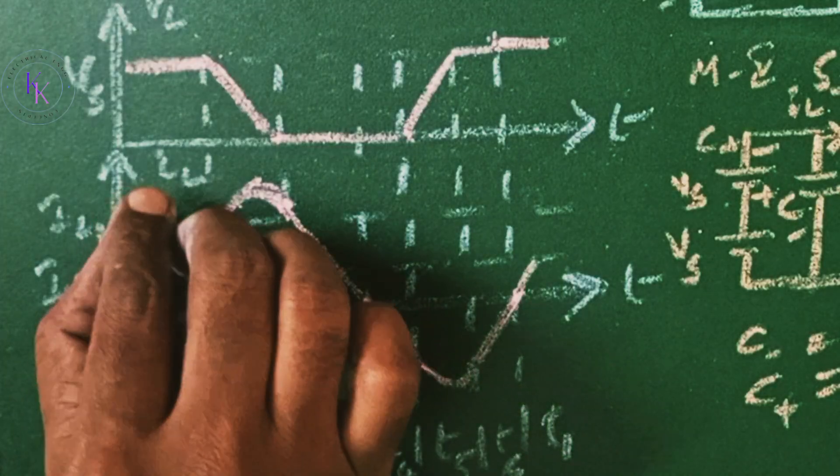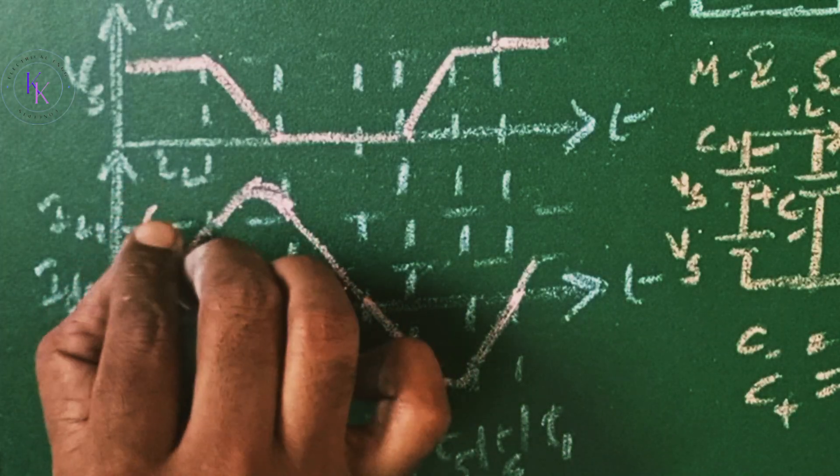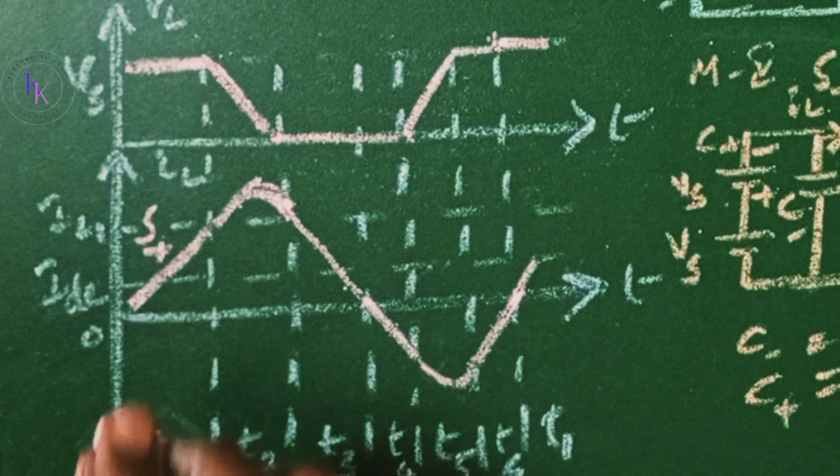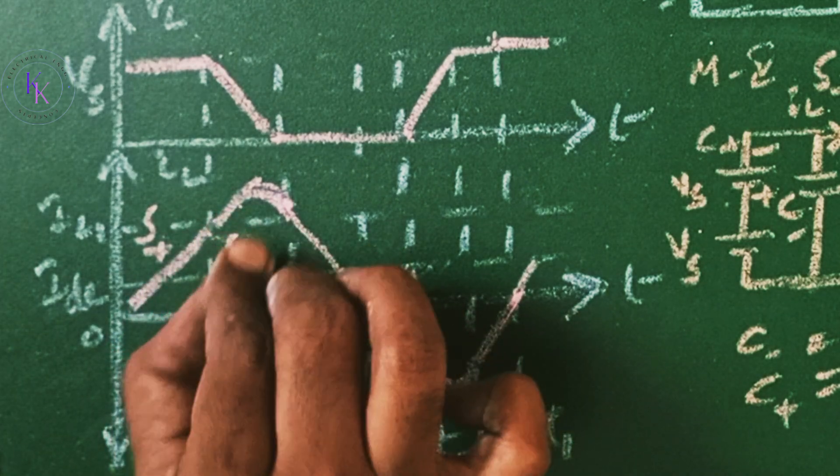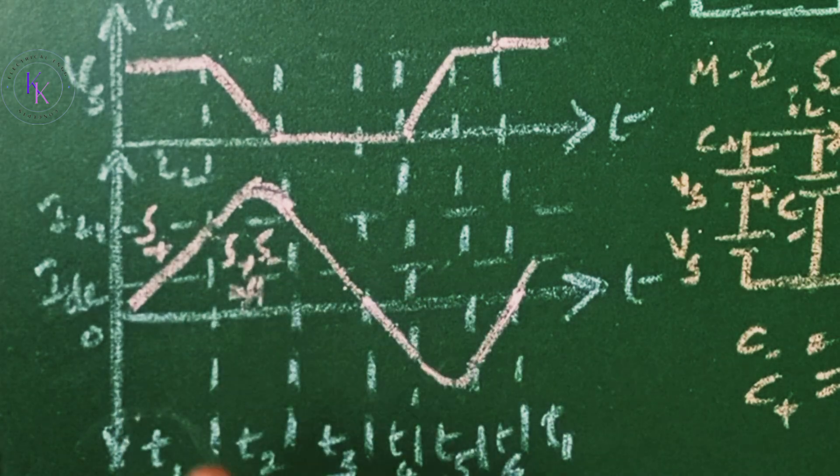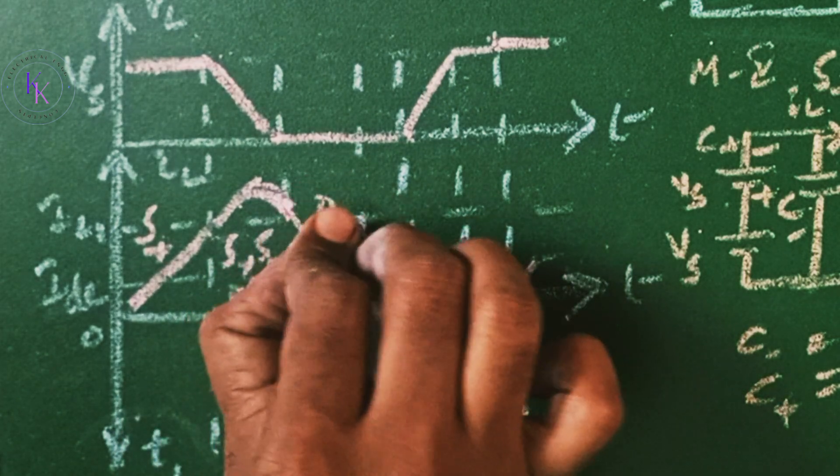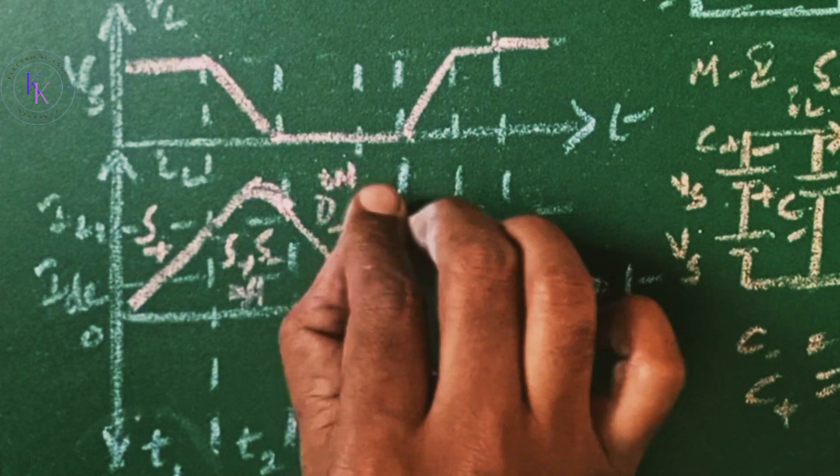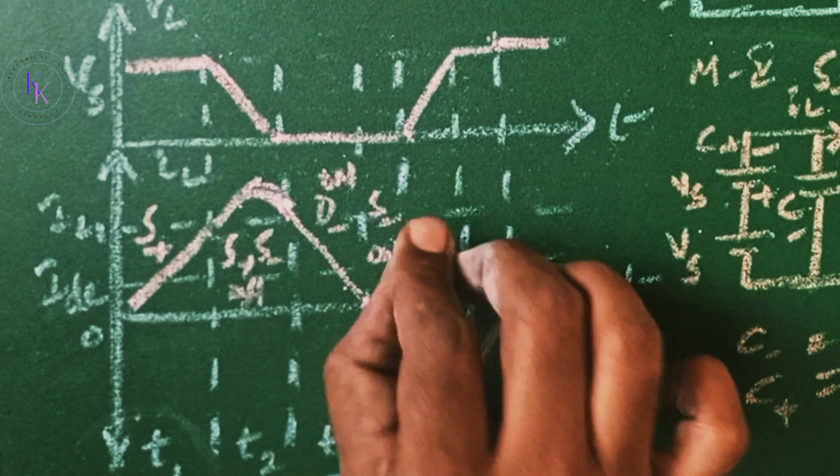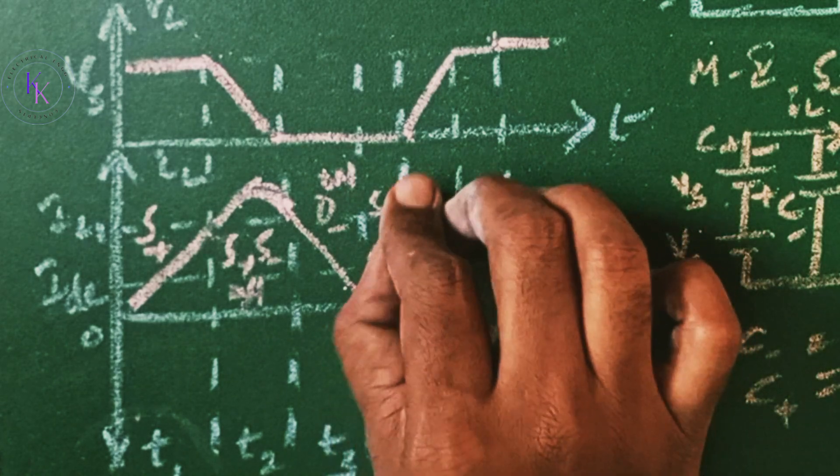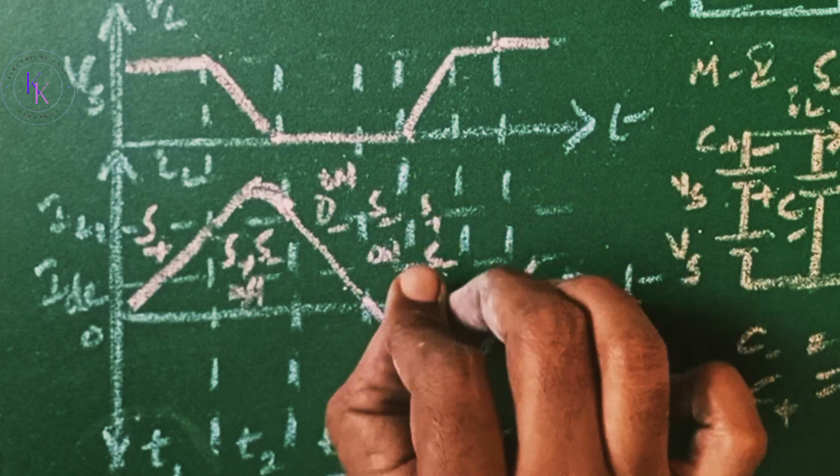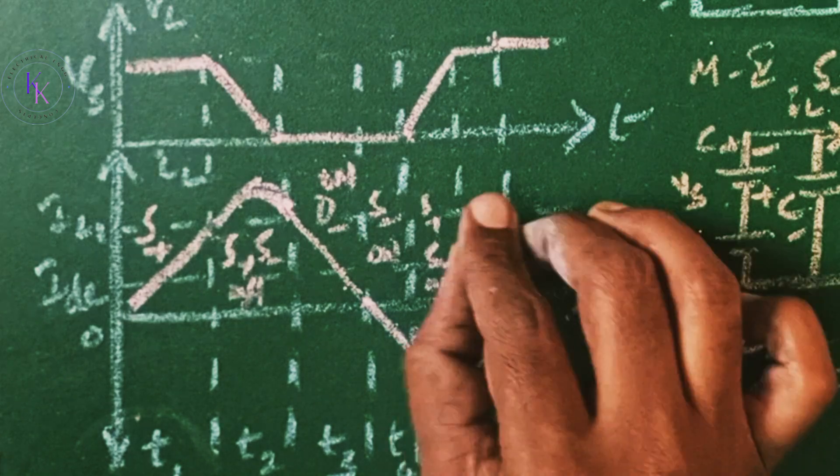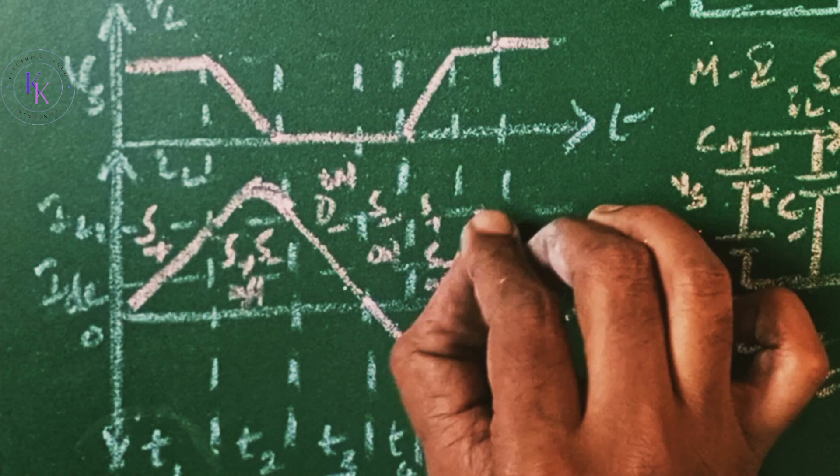In mode 1 the S plus is on. In mode 2 S plus and S minus both are off. In mode 3 D minus is on. In mode 4 S minus is on. In mode 5 S plus and S minus both are off. And in mode 6 D plus is on.